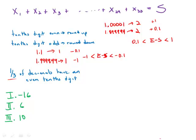So now I know a third of the decimals have an even tenth digit. So I have 10 that have an even tenth digit and that means 20 of them have an odd tenth digit.